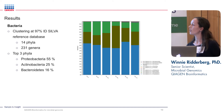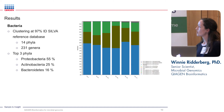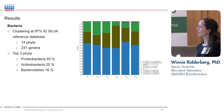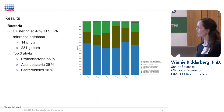Looking at the results for the bacterial communities, we clustered data at 97% identity against the SILVA reference database. This resulted in 14 phyla and 231 genera. The top three phyla detected were Proteobacteria accounting for 55% of the reads, Actinobacteria accounting for 25% of the reads, and Bacteroidetes accounting for 16% of the reads.